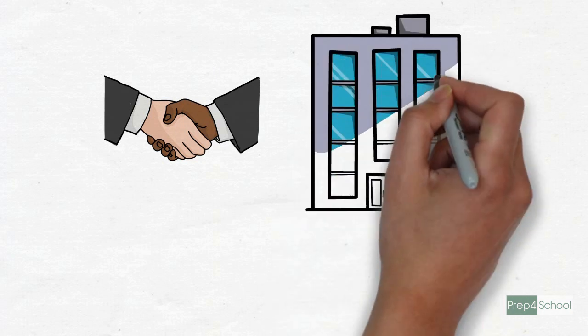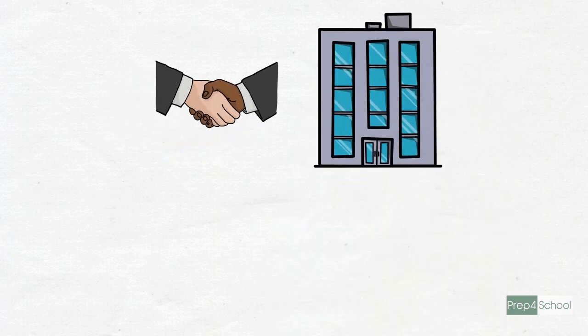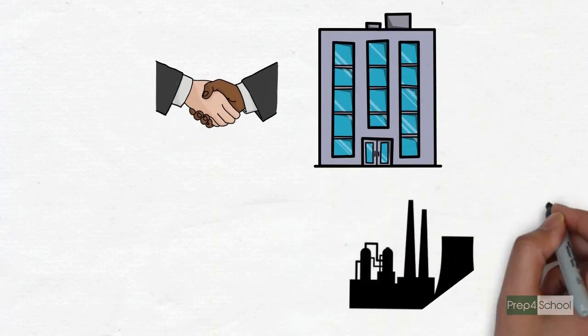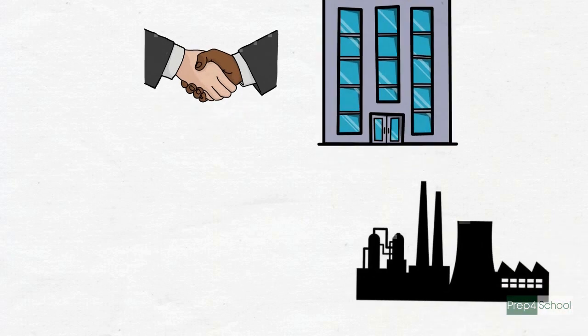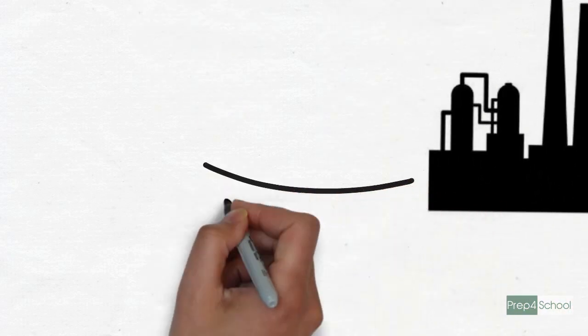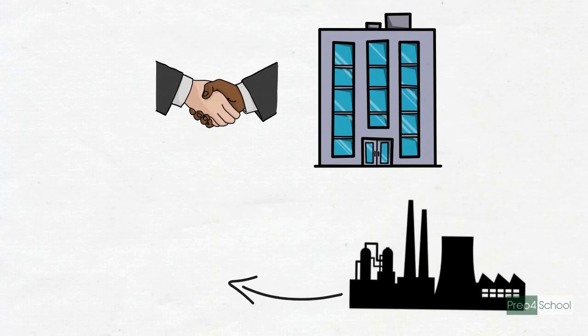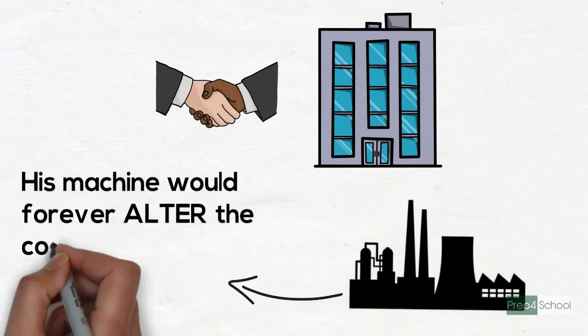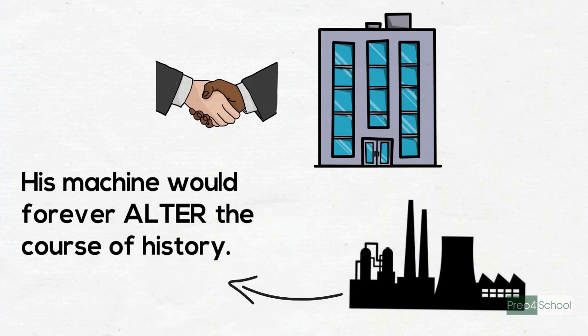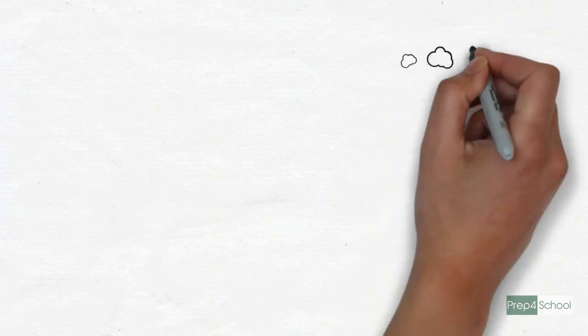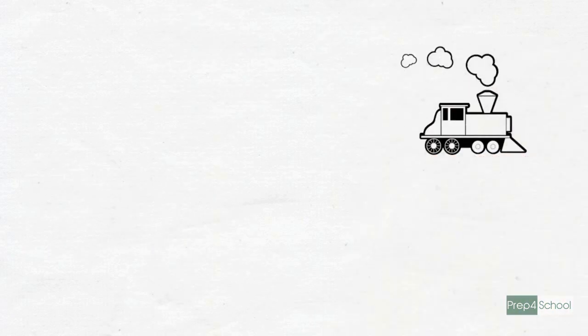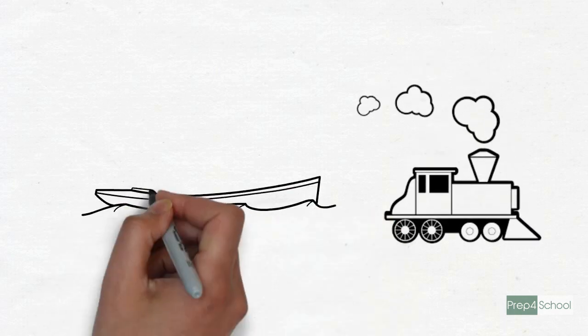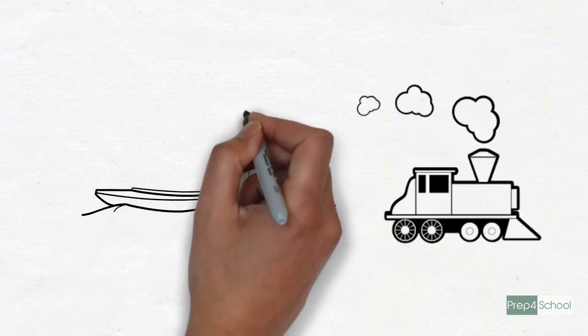Of course, he must have hoped that his improved steam engine would find many uses in factories. But little did he know at that time that his machine would forever alter the course of history. The improved steam engine, aided by the wheel, provided a major advance in the way we travel over water.